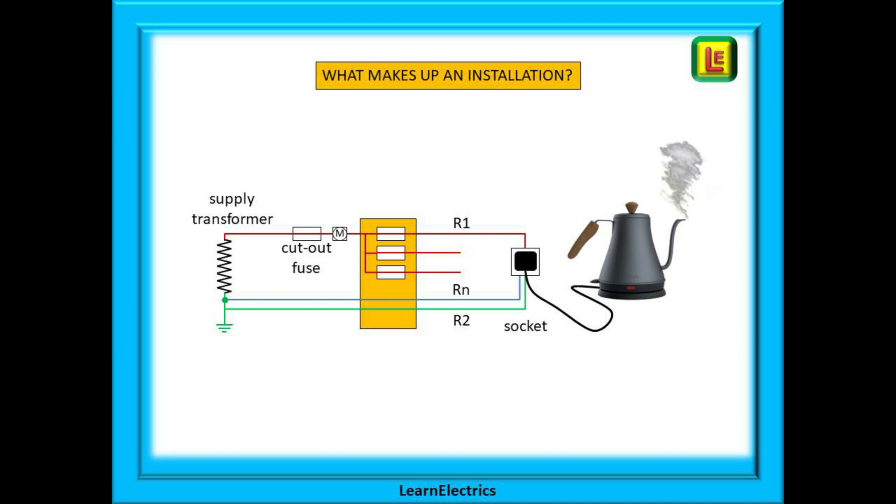Because the kettle is plugged in and switched on, the electricity can flow into the heater element of the kettle where it will lose its energy as it is converted into heat to boil the water. The de-energized electricity flows back along the neutral wire to the supply transformer where it is re-energized and starts the journey all over again.